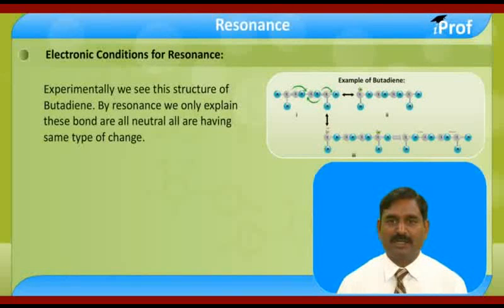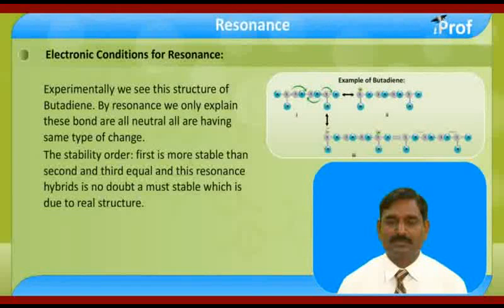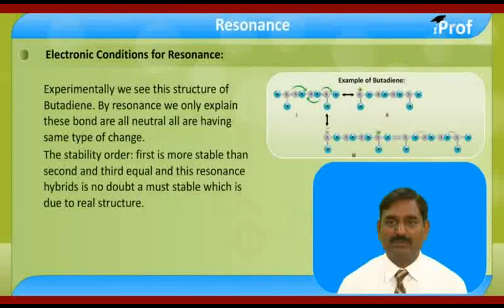All resonating structures are neutral and have the same type of overall charge. The stability order is: structure one is the most stable, then structures two and three are equal in stability.